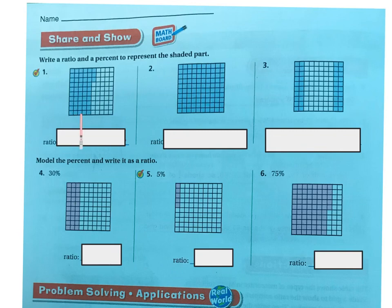It's 10, 20, 30, 40, 50, 51, 52, 53. So my ratio is going to be 53 out of 100 or 53%.